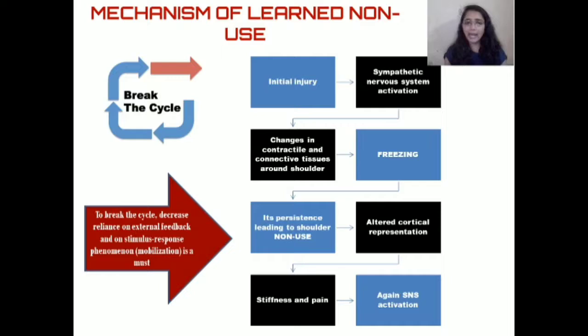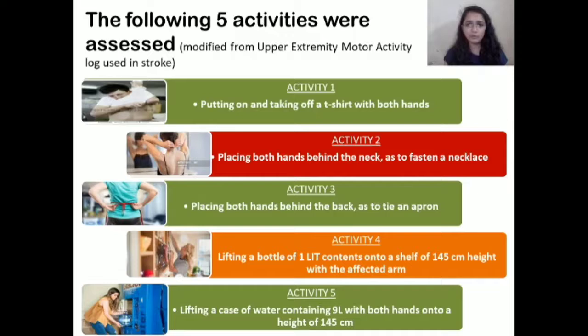For assessment in this study, instead of traditional range of motion and manual muscle testing, the authors used the Upper Extremity Motor Activity Log, selecting five activities that assess shoulder range of motion and strength within functional tasks. These include: putting on and taking off a t-shirt, fastening a necklace, placing hands behind the back to tie an apron, lifting a heavy weight to a certain height with the affected arm, and lifting a heavier weight with both arms to a certain height.